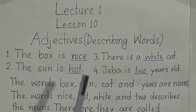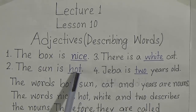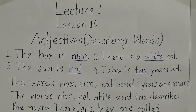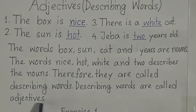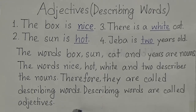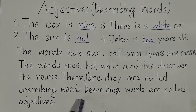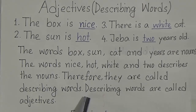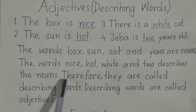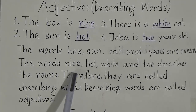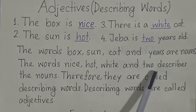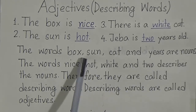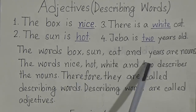So they are called describing words, and describing words are called adjectives. So what are adjectives? Adjectives are describing words. That means adjectives or describing words tell us something more about a noun — they give us some extra information about a noun.